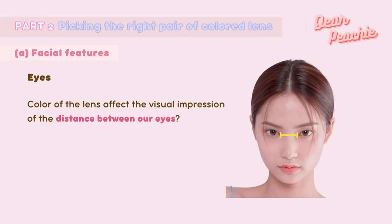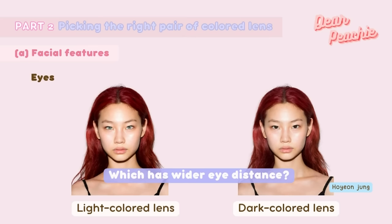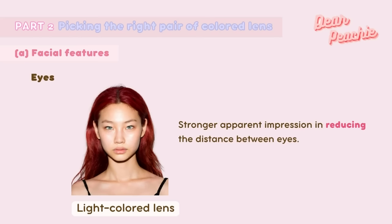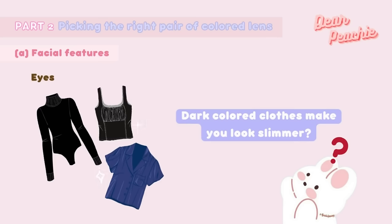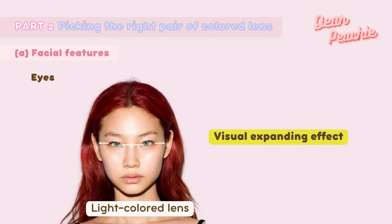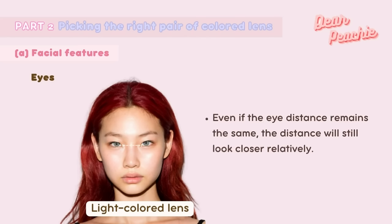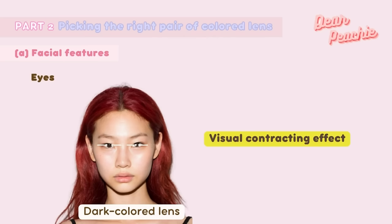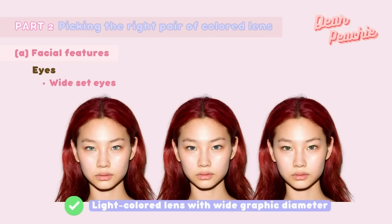Did you know the color of the lens can affect the visual impression of the distance between your eyes? Light colored lenses have a stronger apparent impression of reducing the distance between eyes, while dark colored lenses tend to make wide-set eyes look more obvious. Just like wearing dark clothes makes you look slimmer, this theory applies to colored lenses too. Light colored lenses have a visual expanding effect — when the iris appears larger, the eye distance looks closer relatively. Conversely, dark colored lenses have a visual contracting effect, causing eye distance to appear wider.